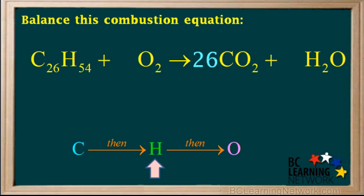Next we'll balance hydrogen. There are 54 hydrogens on the left side. And because a water molecule has two hydrogen atoms, we write a 27 in here. 2 times 27 is 54. So we have 54 hydrogens on the right side. So hydrogen atoms are now balanced.